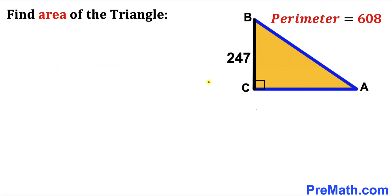Let's get started. Here's our very first step — let me label these side lengths. I'm going to call the hypotenuse AB as lowercase c, label side BC as lowercase a, and side AC as lowercase b.